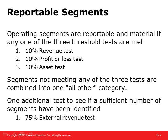Once reportable segments are identified, all other operating segments are combined in an 'all other' category. An additional test checks whether a sufficient number of segments have been identified: reported segments must include at least 75% of all external revenue, which excludes intersegment revenue. If reportable segments do not meet this criteria, additional segments must be identified as reportable even if they don't meet the quantitative thresholds. Two or more smaller segments may be aggregated to form a reportable segment only if they meet a majority of the aggregation criteria.